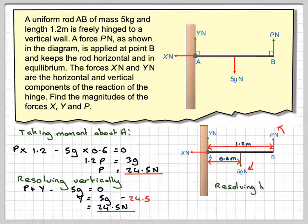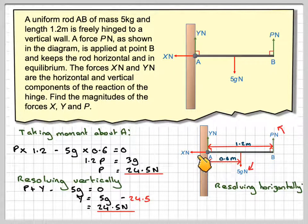Now, resolving horizontally, going this way. We've got no force going that way, but we have a force going that way. Therefore, X must be equal to 0 Newtons.